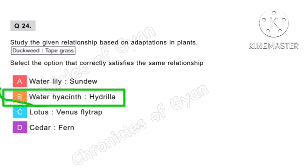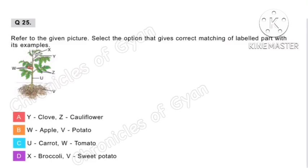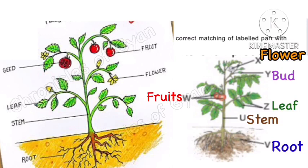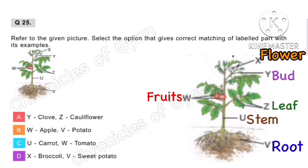Question 25. Refer to the given picture. Select the option that gives correct matching of labeled parts with their examples. The parts are labeled X, Y, U, Z, W and V. The correct match is X (flower) is broccoli and V (root) is sweet potato. So option D is the correct answer.